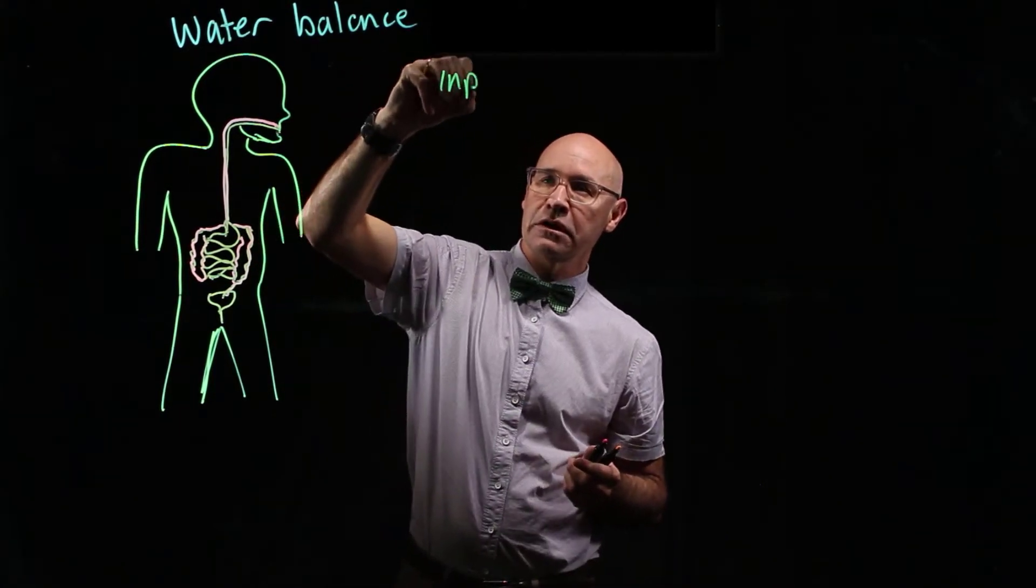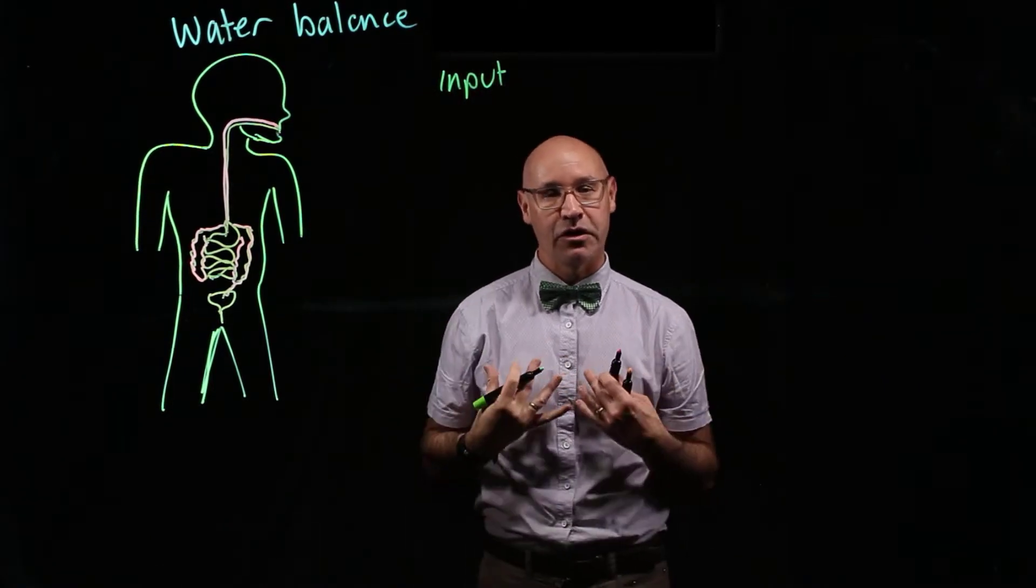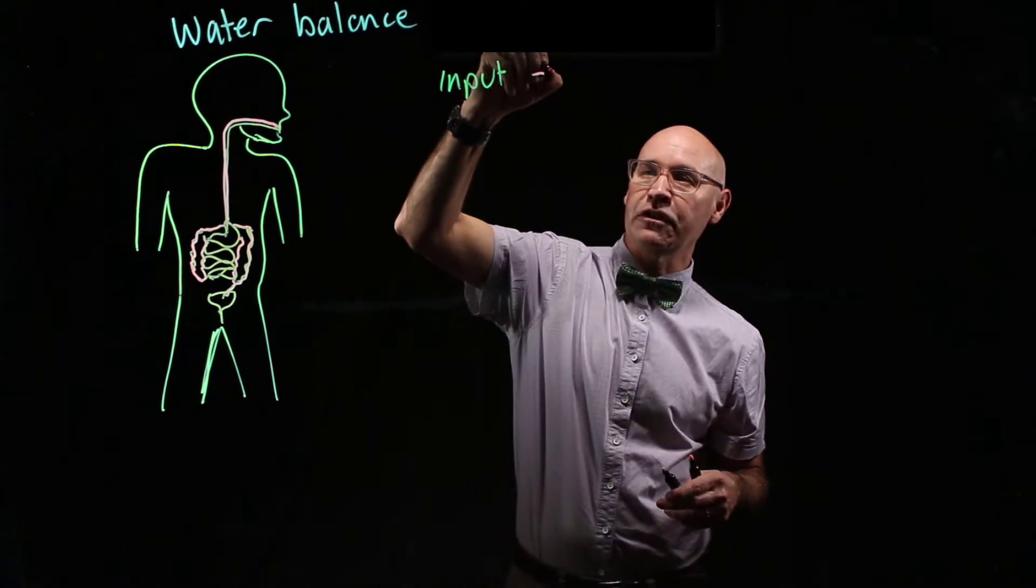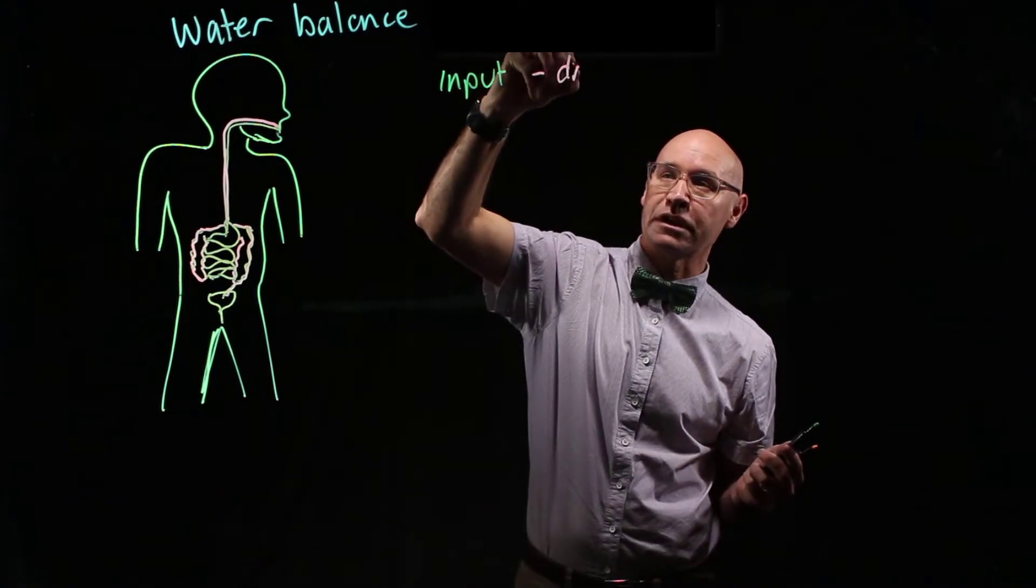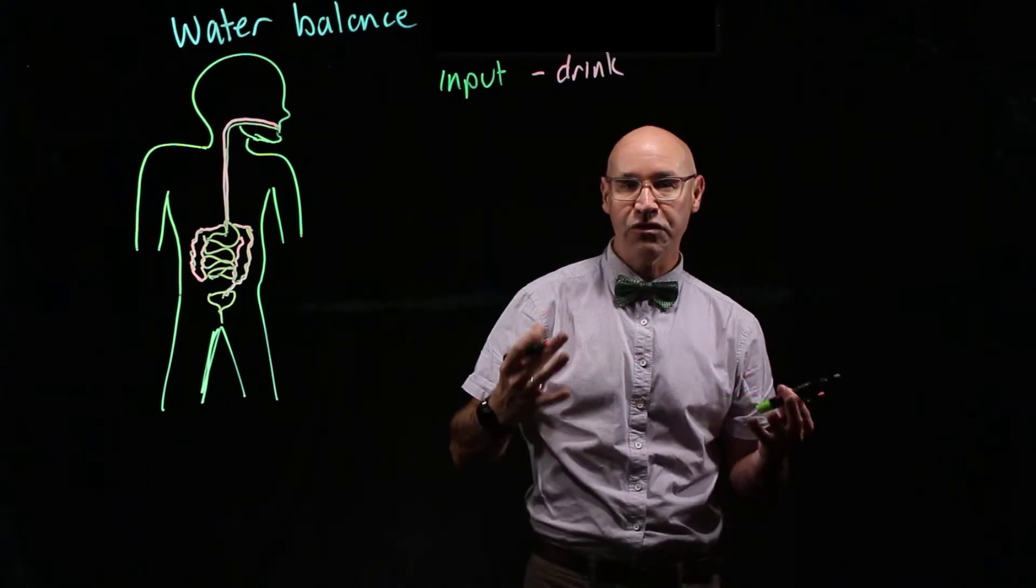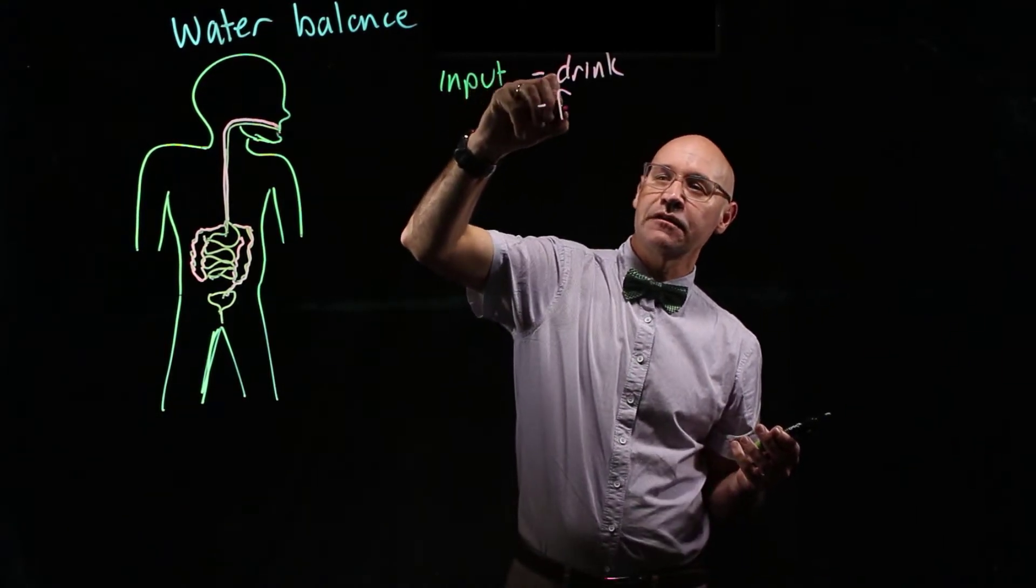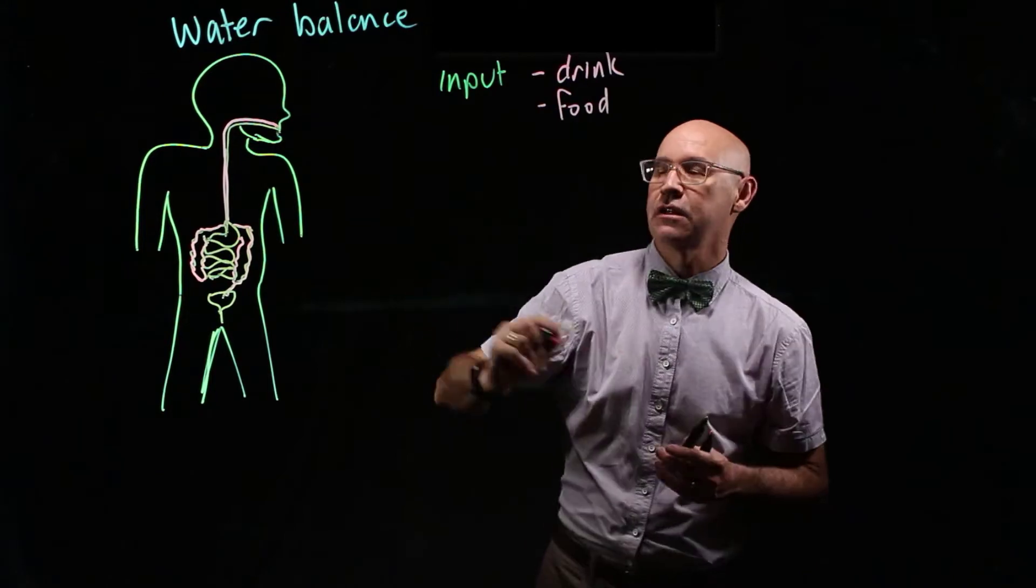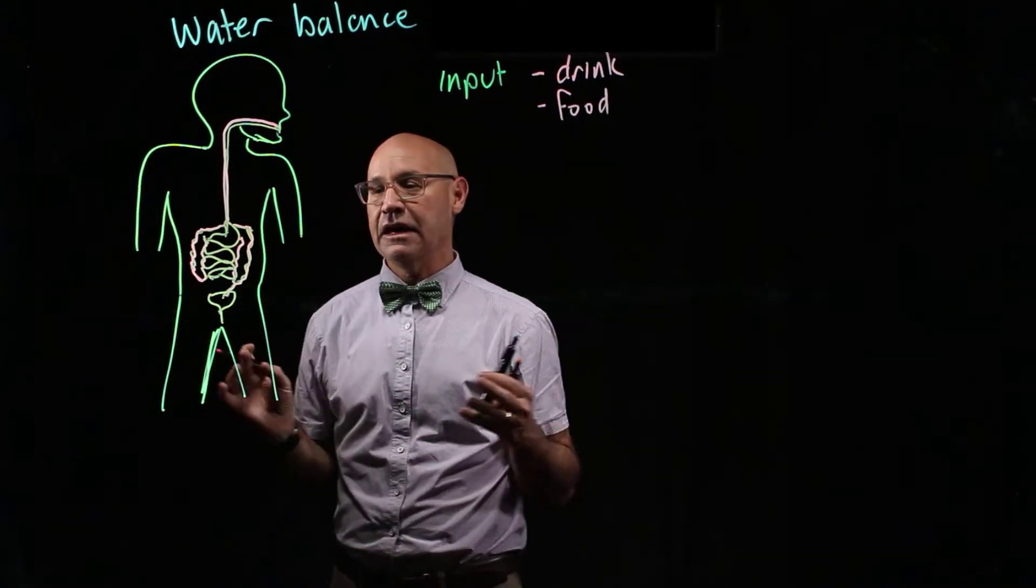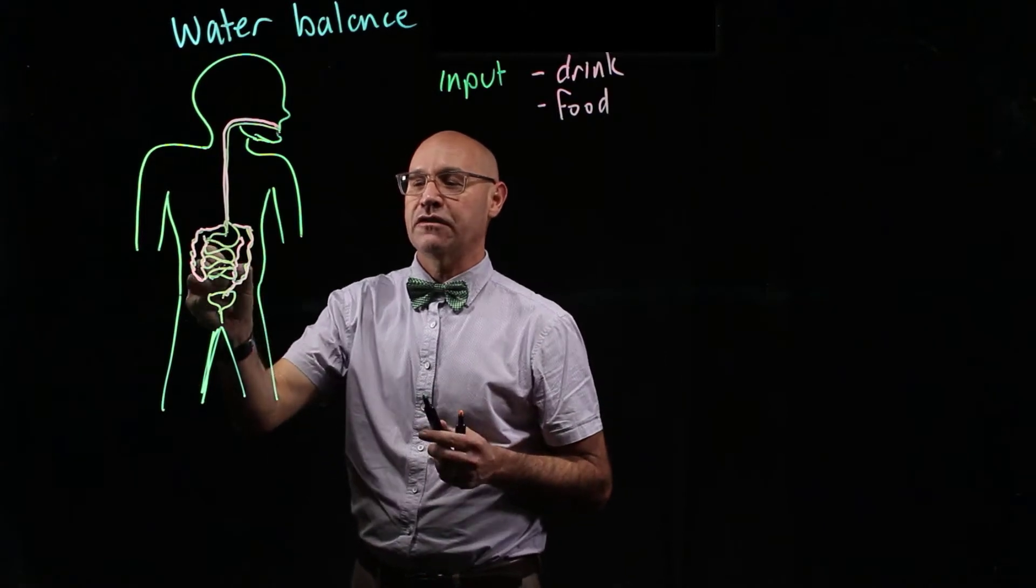The way that water gets into the body is through the digestive system. It is through obviously the water or the drinks that we drink, but it's also the food that we eat. Food contains water, so food and drink through the digestive system gets absorbed out into the blood through the small intestine and also the large intestine.